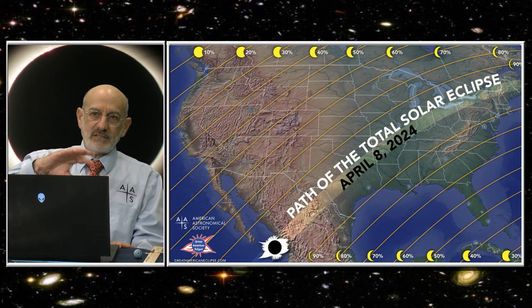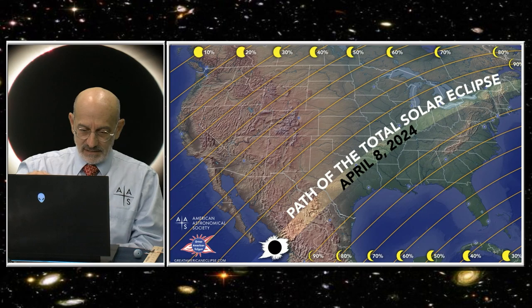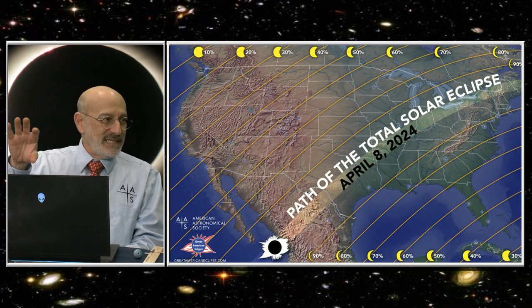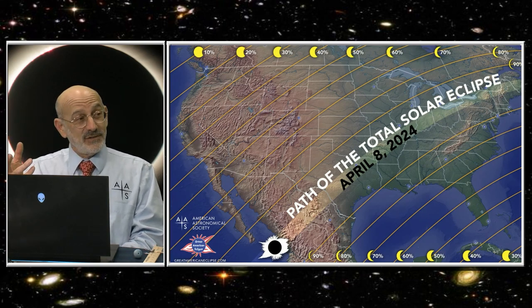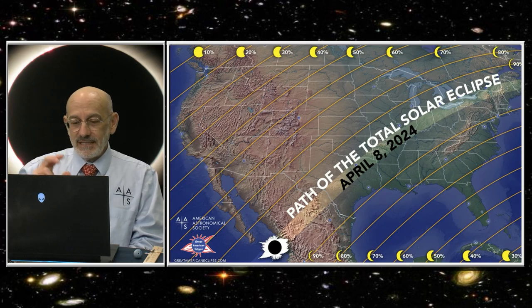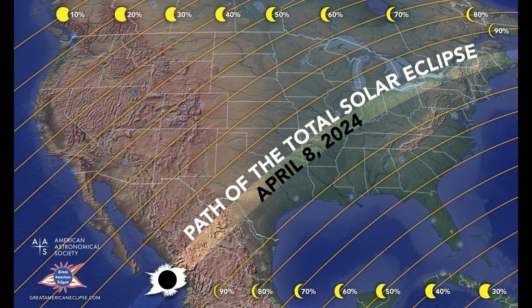But it tracks thousands of miles across earth's surface. In this case it enters North America at Mexico, crosses Mexico, enters the U.S. at Texas, and then heads up to the northeast, touches the very northern tip of New Hampshire where we are, and then into Maine and off into eastern Canada.